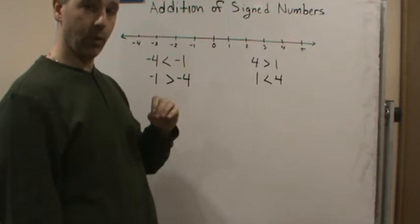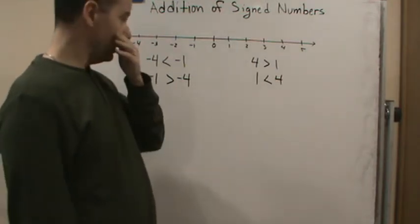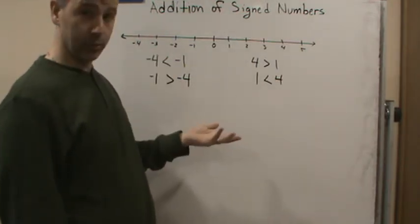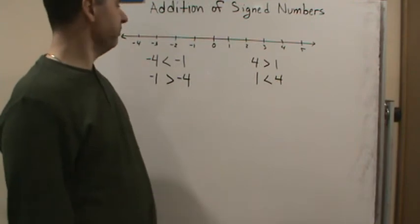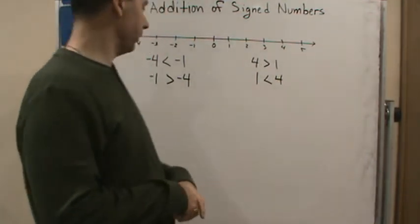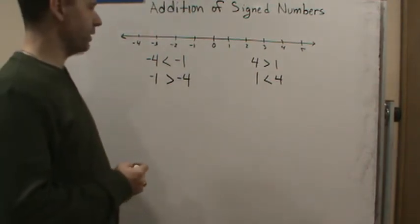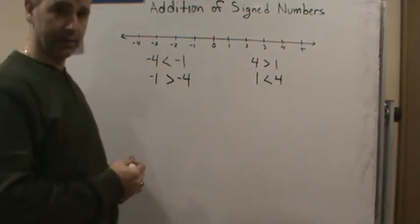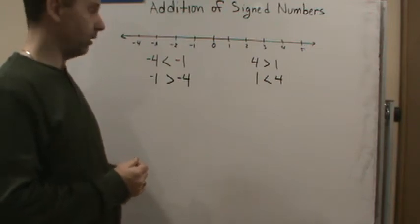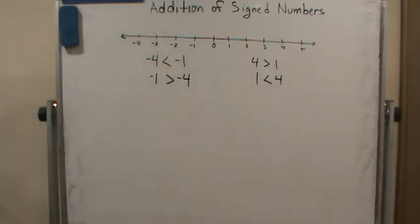Those are what we call the signed numbers, or signed whole numbers. So integers are all the counting numbers and their negatives, including zero.